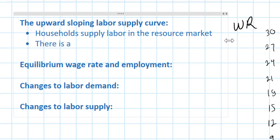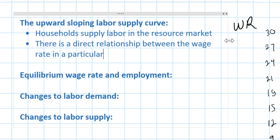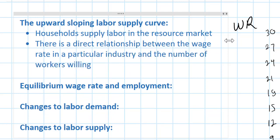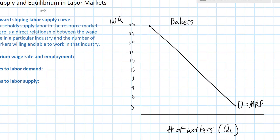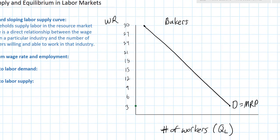There is a direct relationship between the wage rate in a particular industry and the number of workers willing and able to work in that industry. If the wage rate for bakers in the bakery market is $3 per hour, very few people are going to be willing to work as bakers. At higher wage rates, the number of people willing to work as bakers increases. This direct relationship is what determines the upward sloping supply of labor curve.